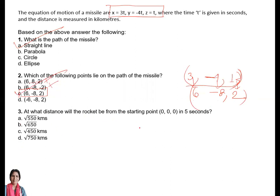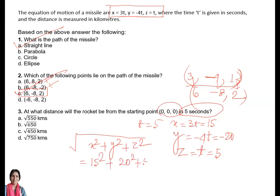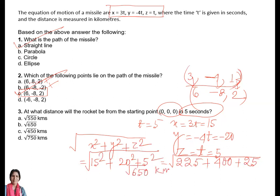Third: at what distance will the rocket be from (0, 0, 0) in 5 seconds? So t = 5. x = 3×5 = 15, y = -4×5 = -20, z = 5. The distance from (0, 0, 0) will be √(x² + y² + z²) = √(15² + (-20)² + 5²) = √(225 + 400 + 25) = √650 kilometers. So B is the answer of this question — wait, it will certainly be √650 kilometers.